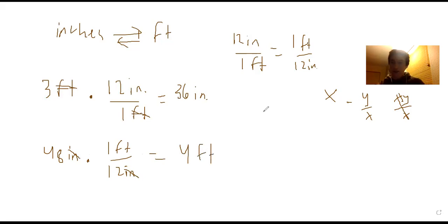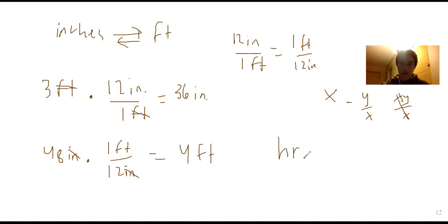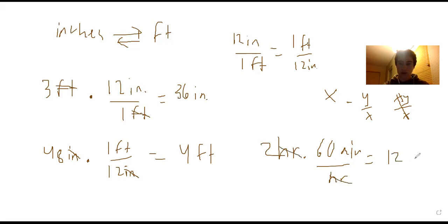This can also be applied to minutes and seconds. We know there are 60 minutes in an hour, so if we have 2 hours times 60 minutes per hour, we can cancel out the hours unit and we get 120 minutes.